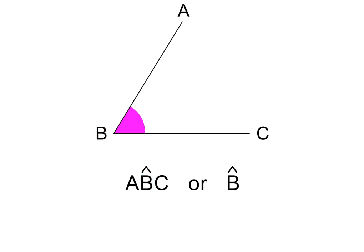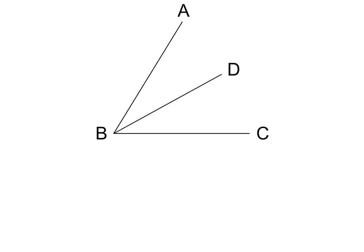We can also name it angle B because there is only one angle at B. But what happens if we add the line BD to the diagram? We now have two angles at B: angle ABD and angle DBC. In this case we cannot just use B for the name.